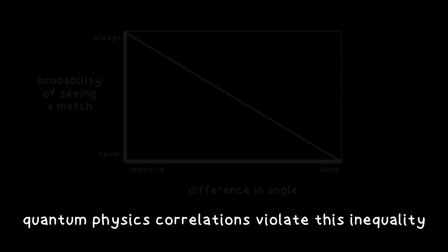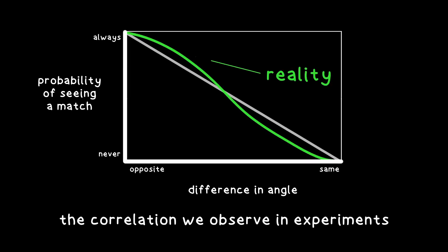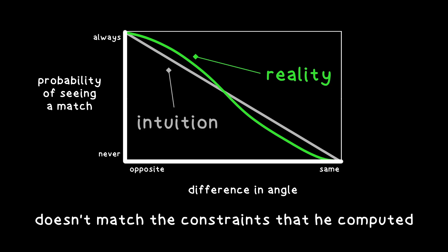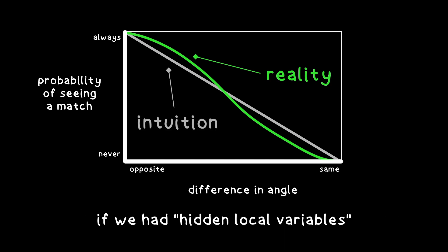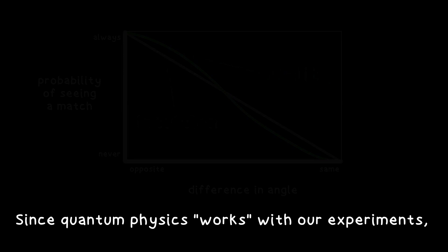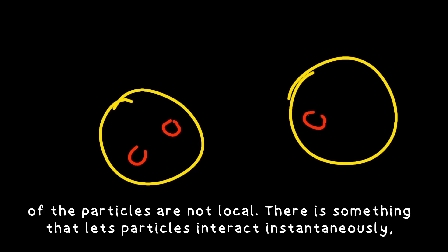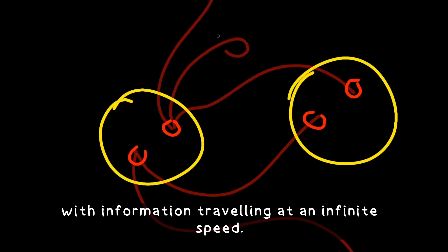But Bell then shows that quantum physics correlations violate this inequality. The correlation we observe in experiments doesn't match the constraints that he computed if we had hidden local variables. Since we see that quantum physics works with our experiments, something must be wrong in the reasoning. The only way to make the Bell inequality work is to assume that the hidden variables of the particles are not local. There is something that lets particles interact instantaneously, with information travelling at an infinite speed.